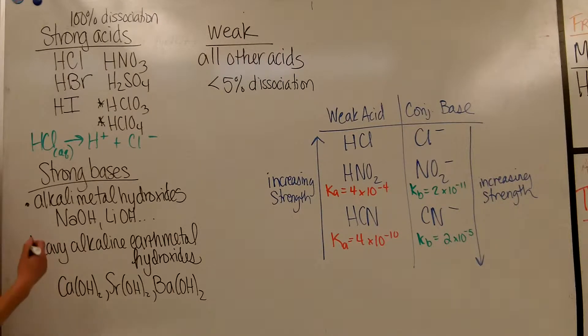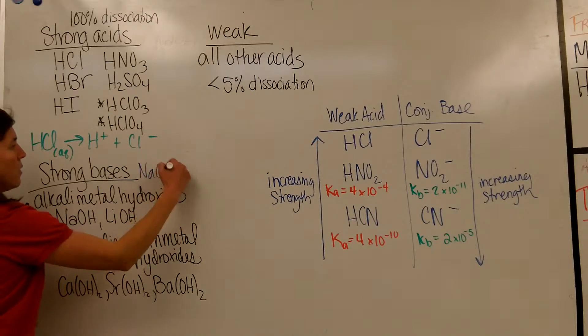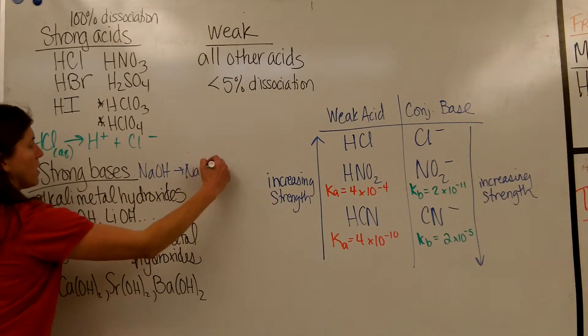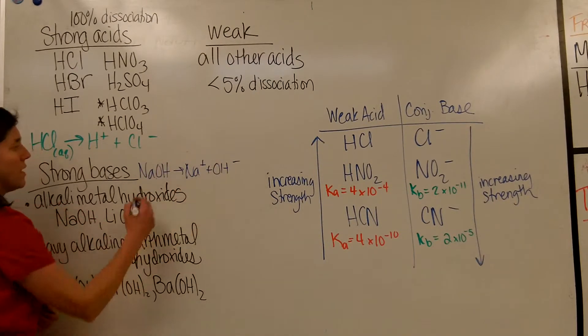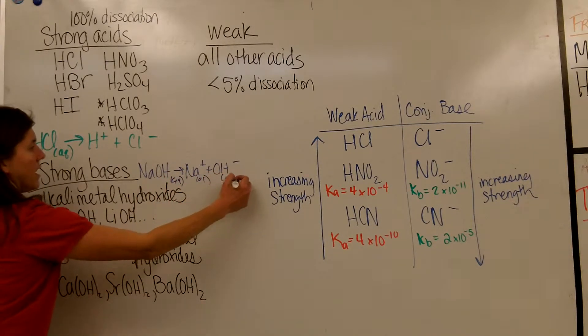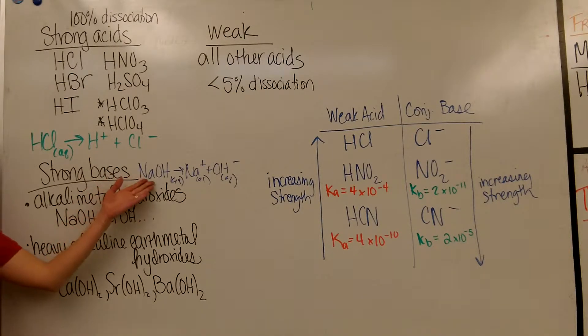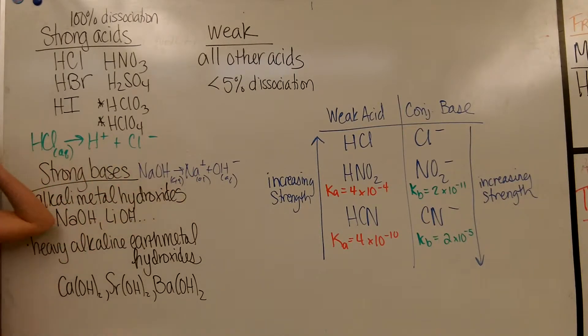When you stick those in water, since all my alkali metals are totally soluble, when you stick, for example, sodium hydroxide in water, it will totally dissociate to sodium ions and hydroxide ions. And again, that's why we call it a strong base. So if you had a one molar solution of sodium hydroxide, that means you have one molar hydroxide ions, because all of this is being converted into this.